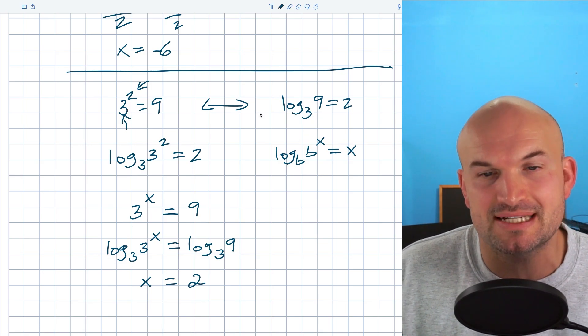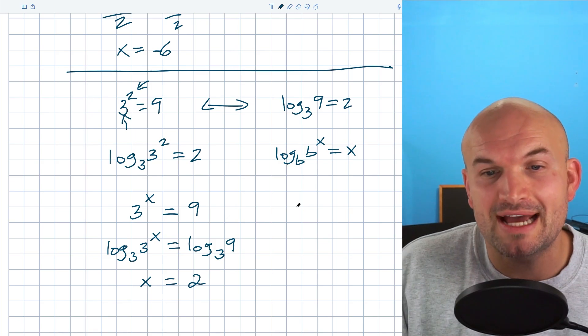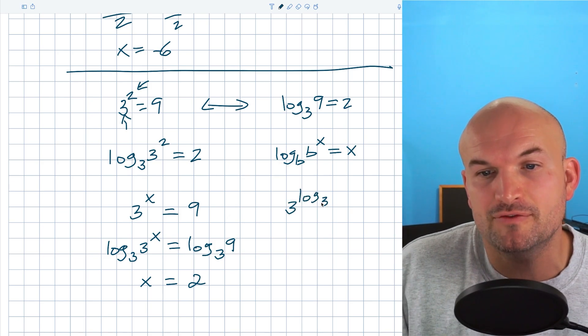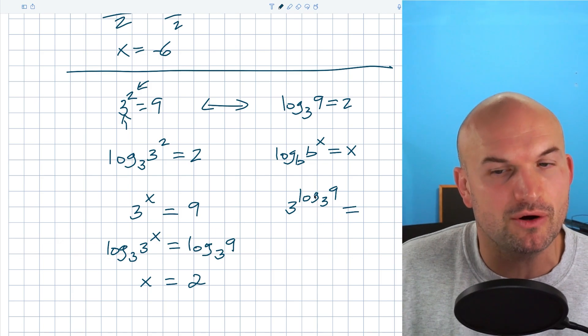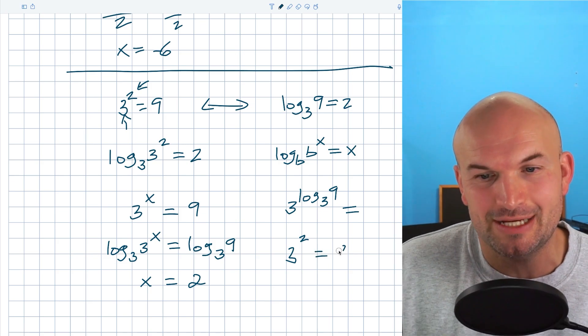So what I want to do is take again this example and let's pretend we have this rewritten as exponents. So what if I had 3 raised to the log base 3 of 9? What exactly does that equal? Well, let's just go ahead and solve this step by step. Log base 3 of 9, we already know is equal to 2. So 3 squared is equal to 9.